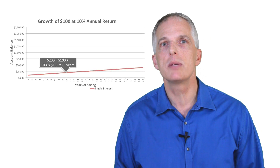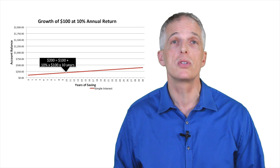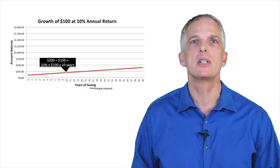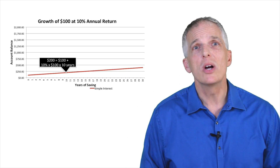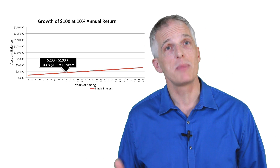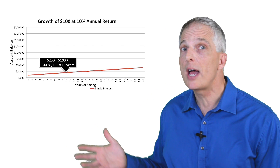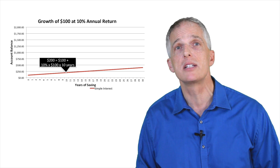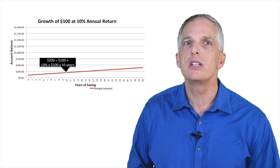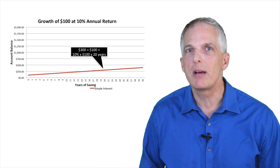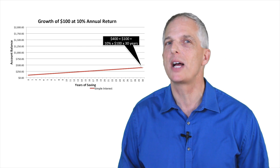Let's now think about the impact of compound interest on our savings balance after 10, 20, or 30 years, continuing with our simple example of investing $100 today at an interest rate of 10%. In our first scenario, let's assume we only earn interest on our original investment of $100 each year — only $10 in interest every year — and we do not earn compound interest. This is sometimes referred to as simple interest. The red line in this graph shows how our savings balance grows over time. At the end of 10 years we will have $200. After 20 years, $300. After 30 years, a balance of $400.